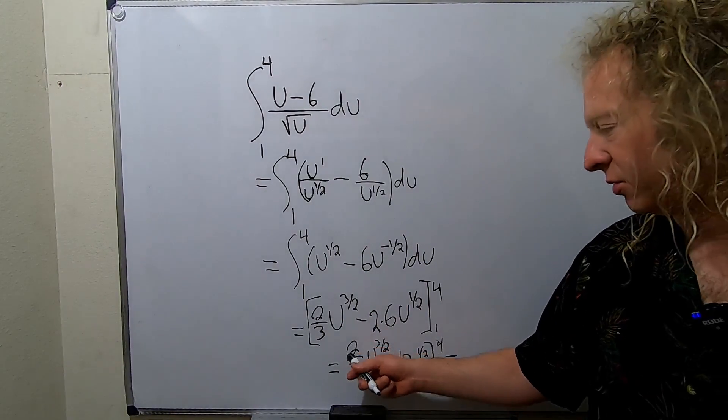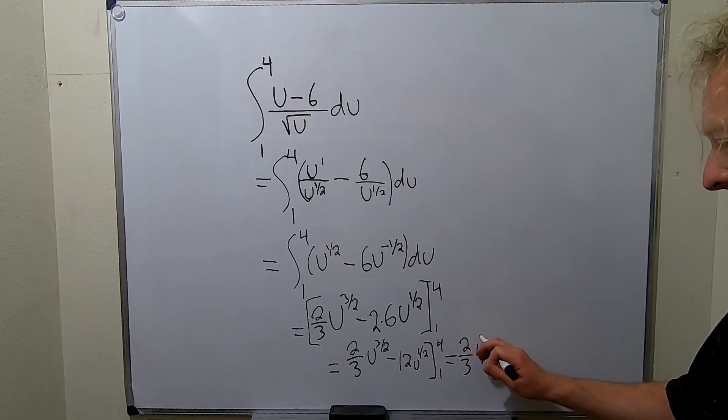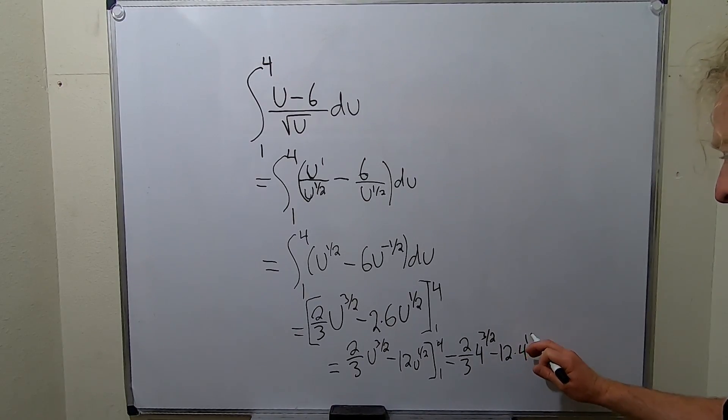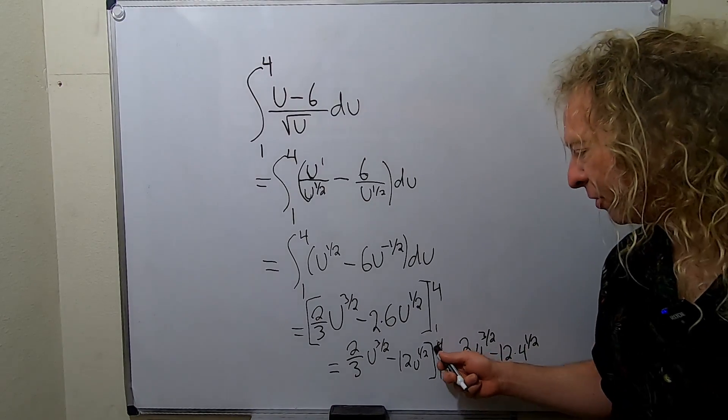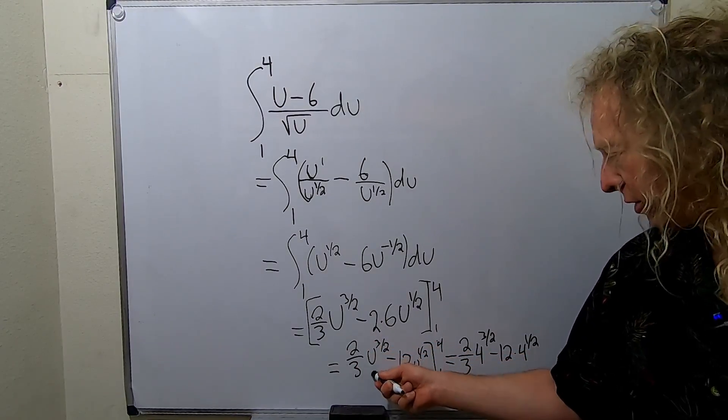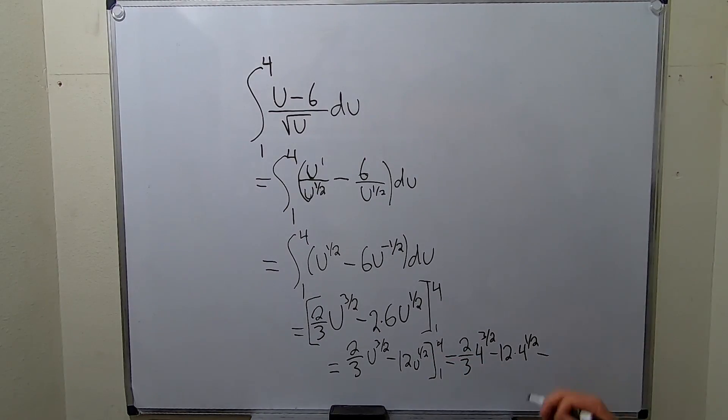Plugging in the top number first, we get 2 thirds, 4 to the 3 halves, minus 12, 4 to the 1 half. All I've done so far is simply put a 4 wherever there is a u. Let's check that. So 2 thirds, 4 to 3 halves, check. Minus 12 and then 4 to the 1 half, check. Minus.